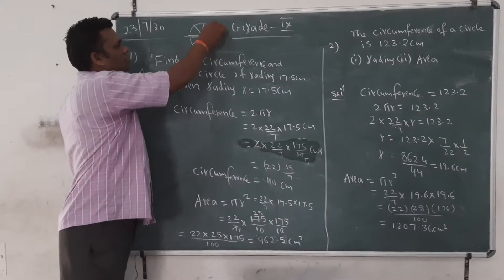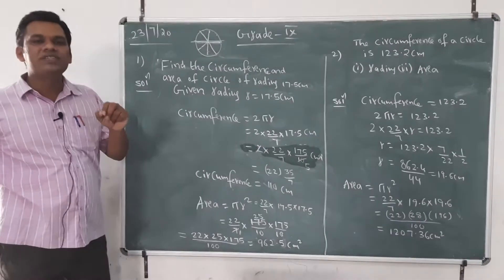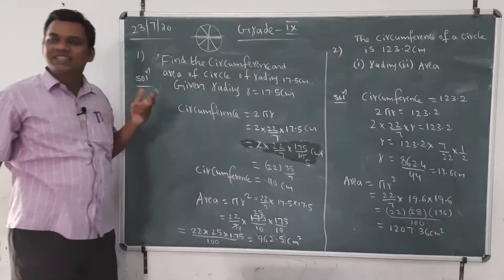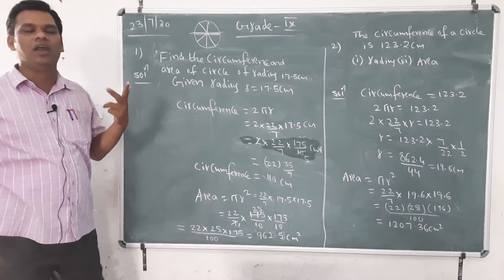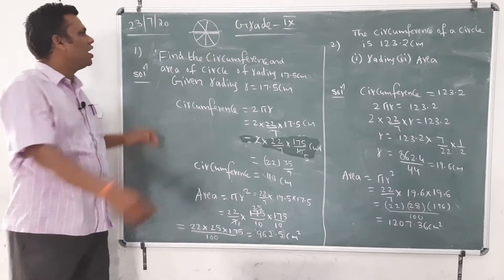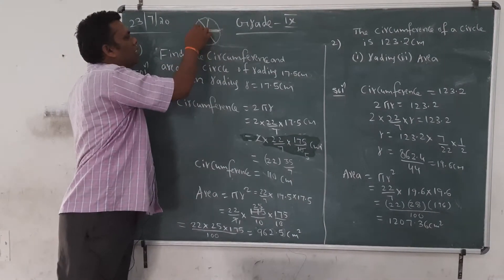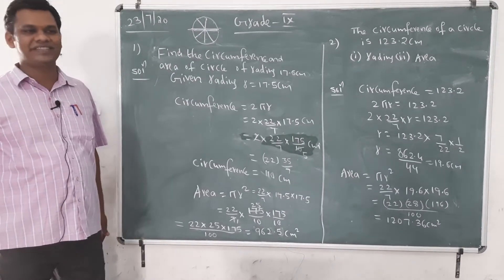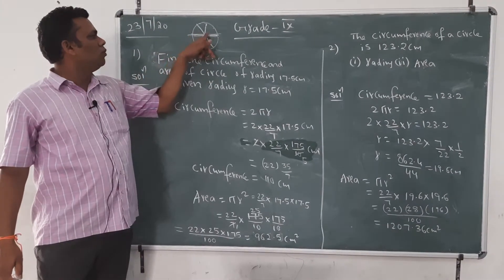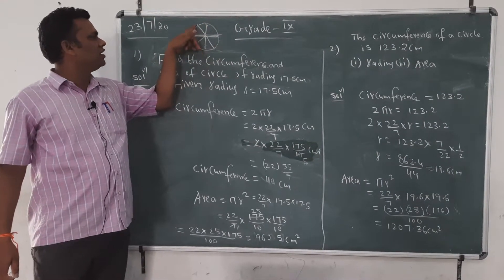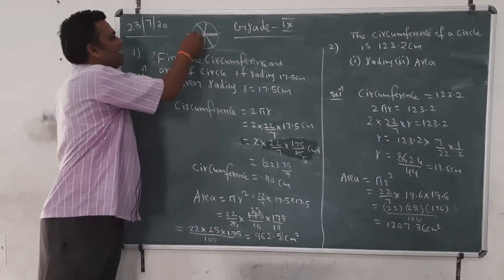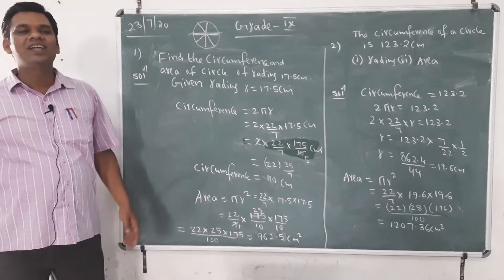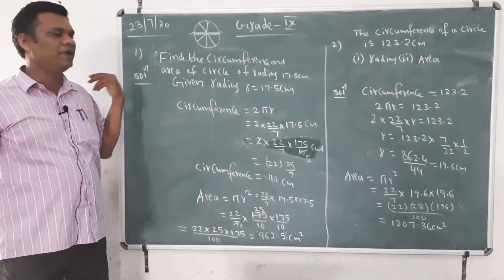The fixed point is called the center of the circle, and the distance from the fixed point to any point on the circle is called the radius. Double the radius is called the diameter.